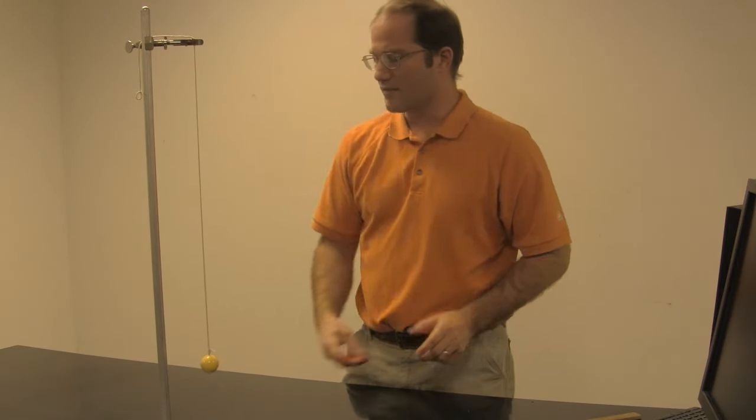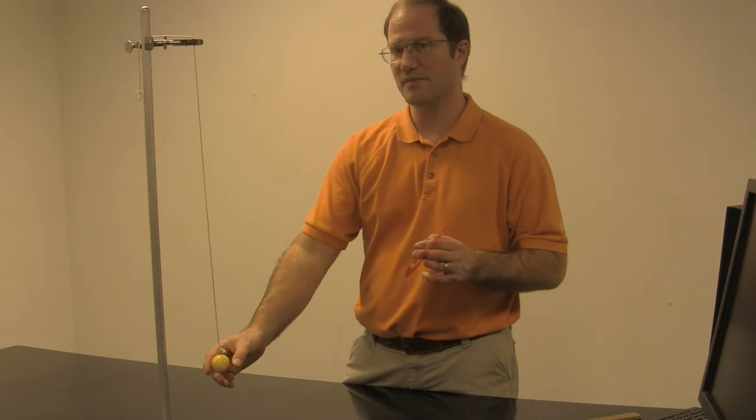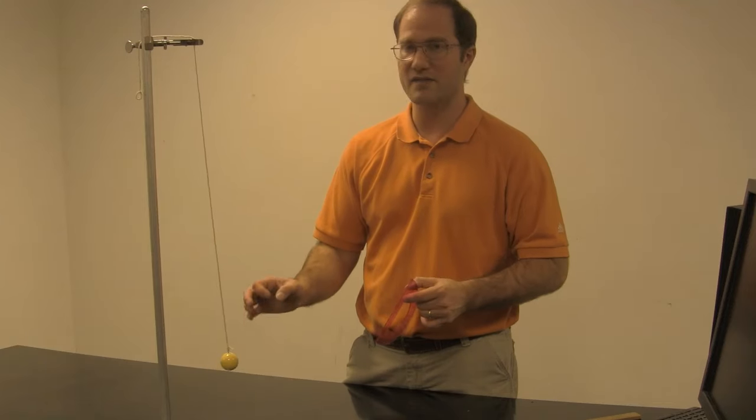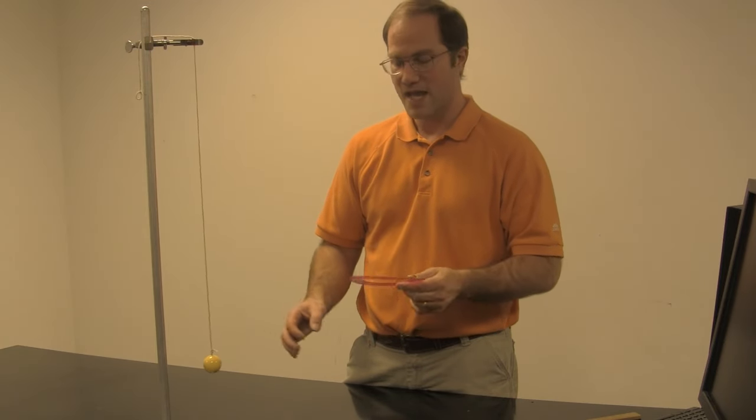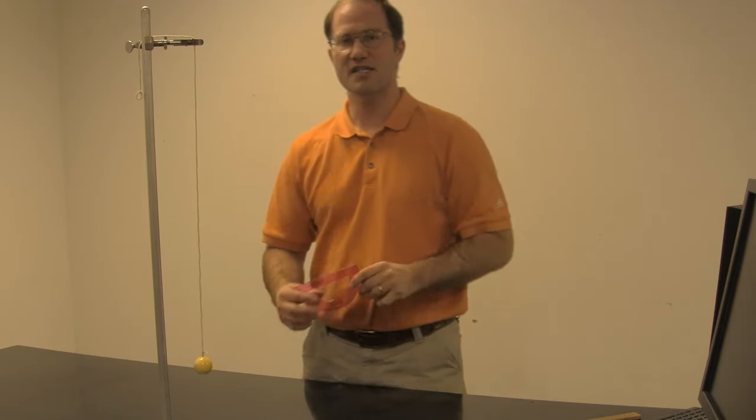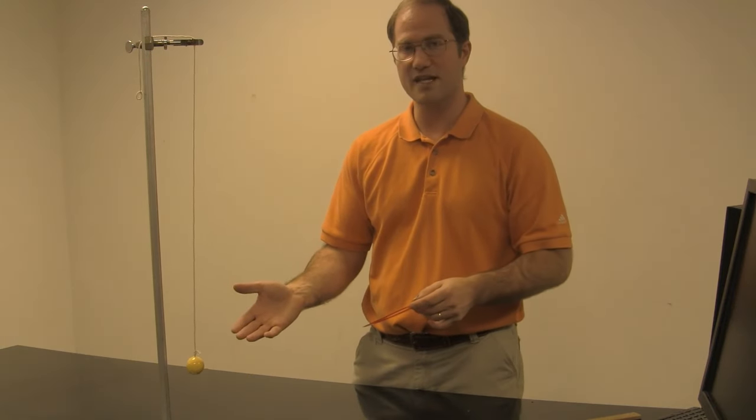Now, one last thing. It's called a simple pendulum because there are some mathematical approximations that take place that assume you're swinging it at a very small angle. And so you have a protractor here just to check that your angle of motion is five degrees or less. It looks like this.